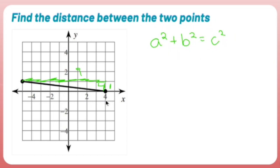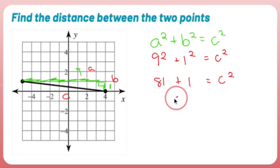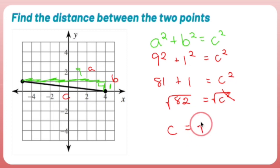In a right triangle, the longest side is always C — the hypotenuse, opposite the right angle. Let A = 9 and B = 1. So 9 squared plus 1 squared equals C squared. That gives 81 plus 1 equals C squared, so 82 equals C squared. Square rooting both sides gives C equals the square root of 82.